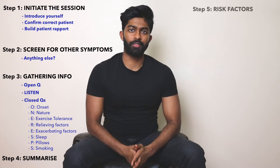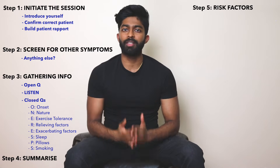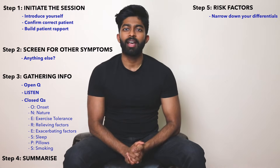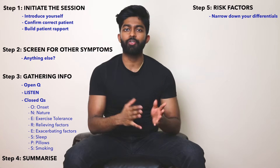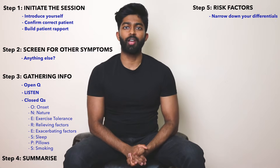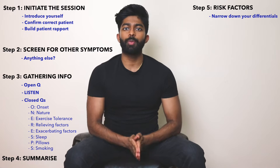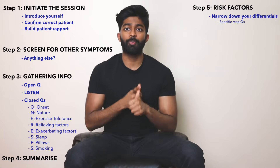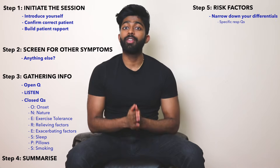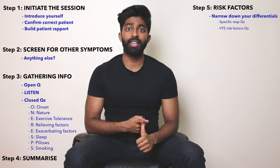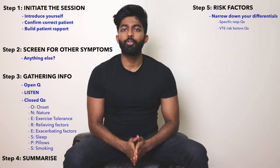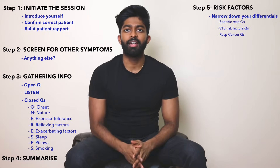Step five is risk factors. I always used to miss out on this part of the history, so I've given it its own section. The point is to really help narrow down your differential — examiners really like it when you're trying to narrow down your differential rather than blindly asking vague respiratory questions. I like to ask three groups of risk factor questions. The first group is specific respiratory questions: do you have any pets at home? Any recent foreign travel? Have you ever been exposed to asbestos? Then the VTE risk factor questions: any calf swelling? Any recent surgery or long-distance travel? Do you take the oral contraceptive pill? And any previous clots in the leg?